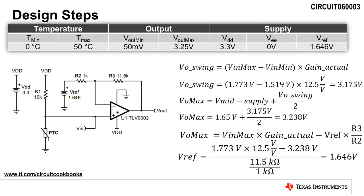Now that we know the output voltage swing, we need to calculate the maximum output voltage when the output voltage is symmetrical around mid-supply, so that we can calculate the reference voltage VREF for the circuit. The maximum output voltage is calculated as 3.238 volts. Using the transfer function of the circuit, we can now calculate the reference voltage required for the design. For the calculation, we will use the maximum output voltage, maximum input voltage, and actual gain. Solving the transfer function for VREF, we calculate the reference voltage to be 1.646 volts.